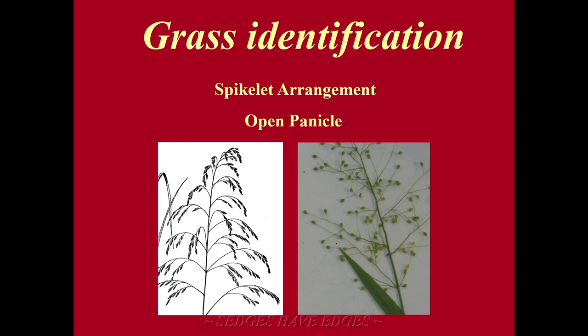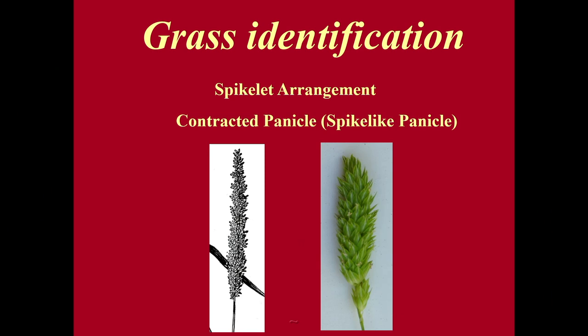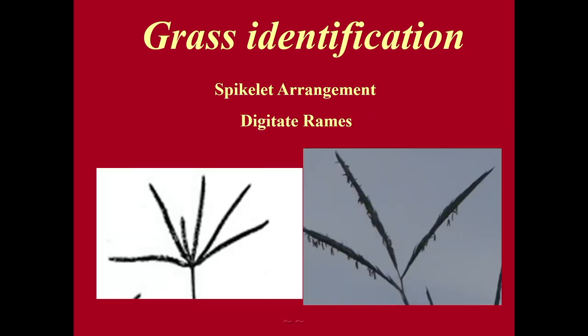One inflorescence type is the open panicle — as you see in the pictures here, there are two different open panicles. If you take that panicle and contract it down, you get a contracted panicle, or spike-like panicle. So two of the five inflorescence types are the open panicle and the contracted panicle.